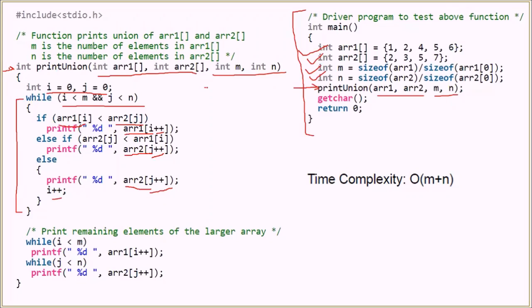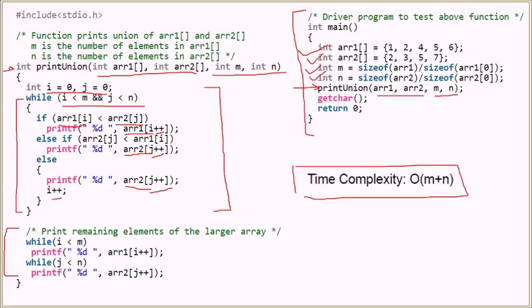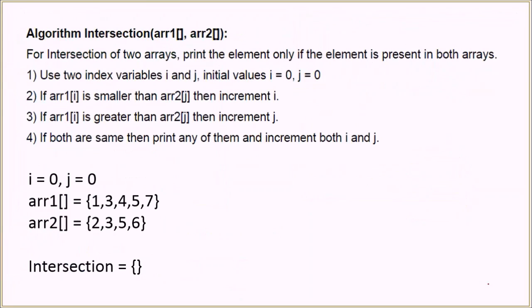Once one of the arrays is exhausted, we exit the while loop. We then have two additional loops to print the remaining elements of the larger array, ensuring we have the correct union. The time complexity of this algorithm is O(m + n). In the worst case — for example if array 1 has elements 1, 2, 3 and array 2 has 4, 5, 6 — the while loop runs 3 times, then the remaining loop runs 3 more times, giving a total of 6 operations for 6 elements.